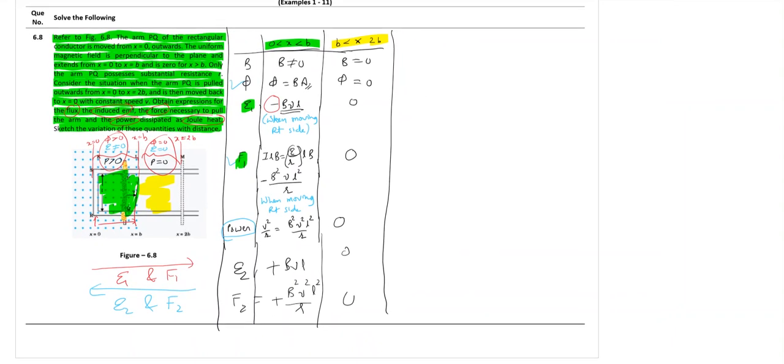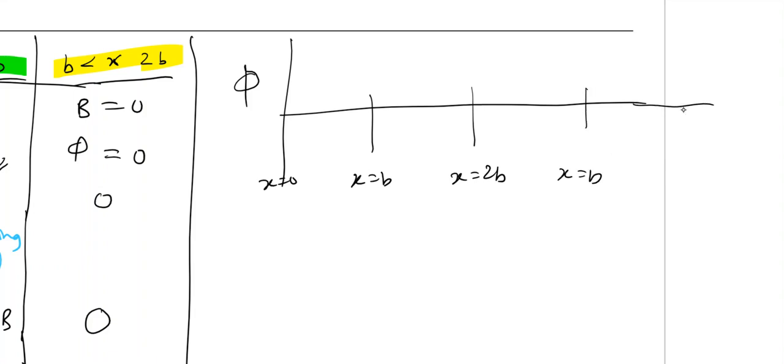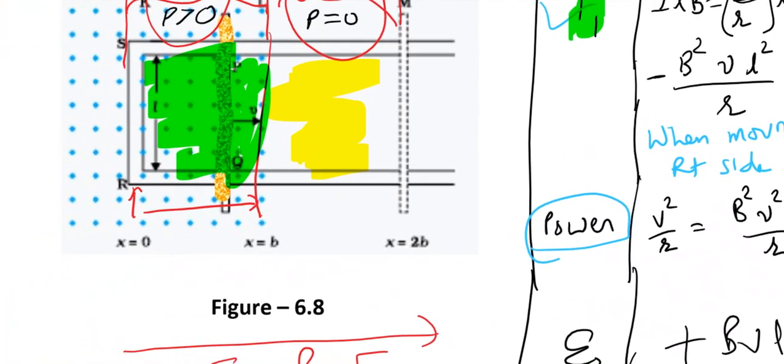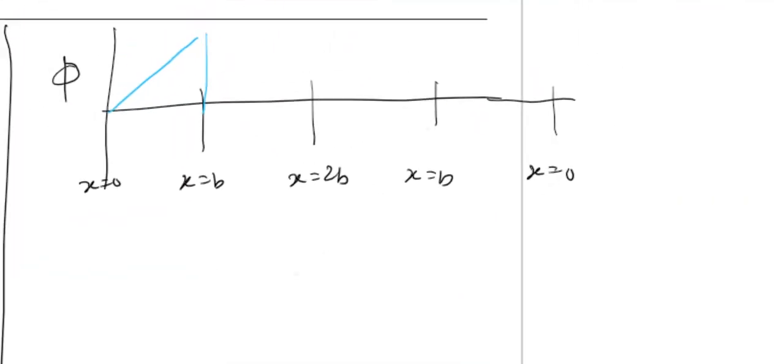Now if I express it in terms of graph, then I can say that for phi versus x graph, from x equal to 0 to b, when you are going from x equal to 0 to b, the flux will gradually increase. I am talking about this region. As you move the rod from this point up to next, you're increasing area. Flux will increase. So flux is increasing. Once you go outside the magnetic field, no flux. But when you again come back, you will have flux which is decreasing. This should be the nature of variation in flux.